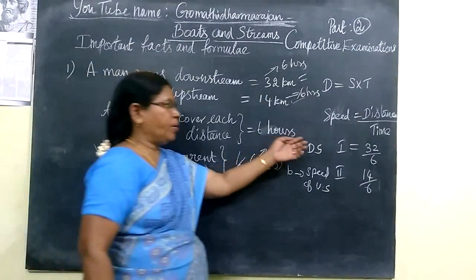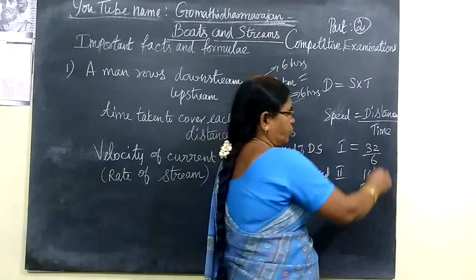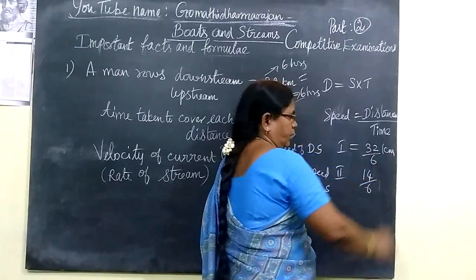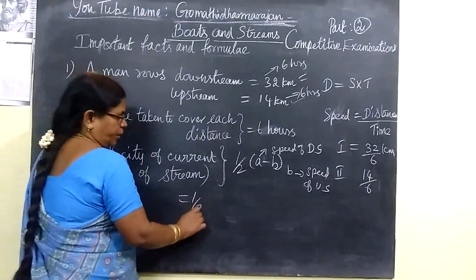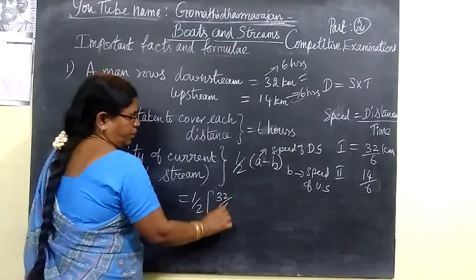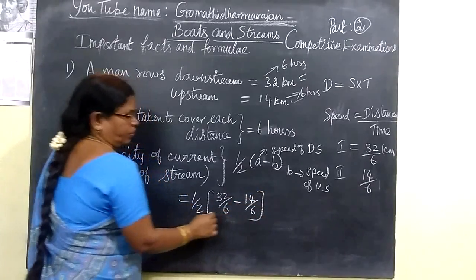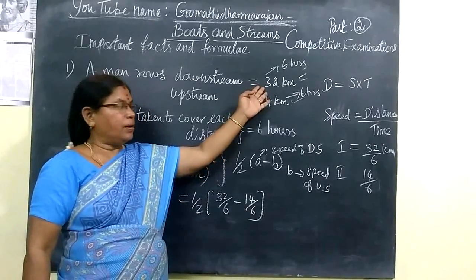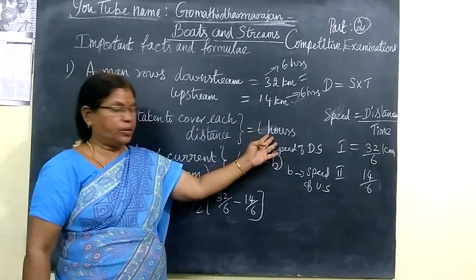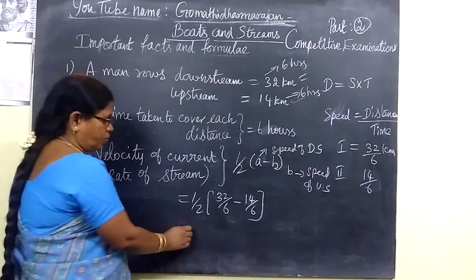So speed, you know, distance by time. Distance would be 32, so 32 km by time would be 6 hours. So you can write half bracket, 32 by 6 minus 14 by 6. Speed equal to distance by time.